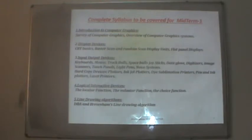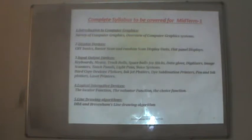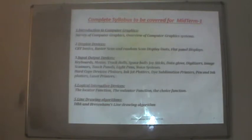Number 3 covers input-output devices: keyboards, mouse, trackballs, space balls, joysticks, data glove, digitizers, image scanners, touch panels, light pens, voice systems, and hard copy devices — plotters, inkjet plotters, dye sublimation printers, pen and ink plotters, and laser printers.